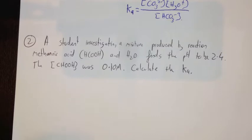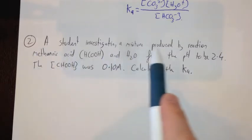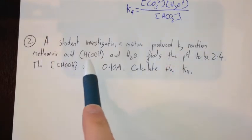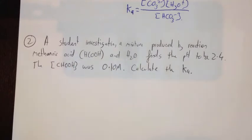Okay, second question for acidity constants. This one involves a student investigating a mixture produced by a reaction of methanoic acid, HCOOH, and water. He finds that the pH is 2.4. The concentration of methanoic acid was 0.1 molar. What we need to do is find the Ka value for this reaction.